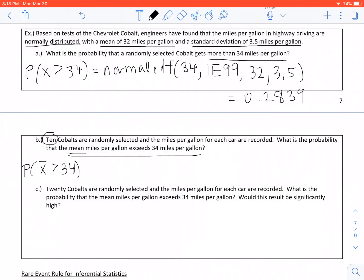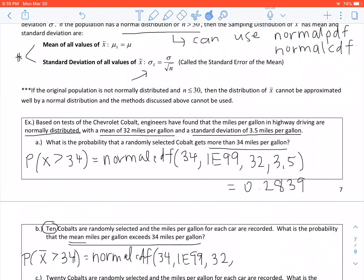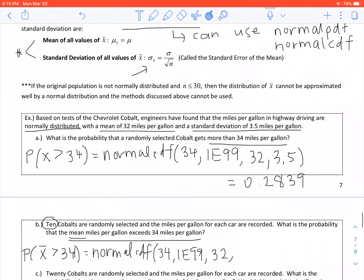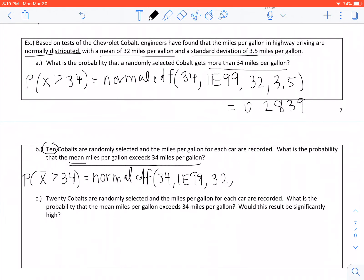Again, we can still use normal CDF. It's going to start with that lower bound, which is 34, goes on forever 1E99, the mean, which same problem, the mean for the Chevy Cobalt is 32 miles per gallon. Your standard deviation: Now, since I'm dealing with a sample here, I want you to look at what we had before—the standard deviation is sigma divided by the square root of n. So sigma is 3.5 divided by the square root of n, and n is our sample size, which is 10. Then close parenthesis, hit enter, and I get 0.0354.